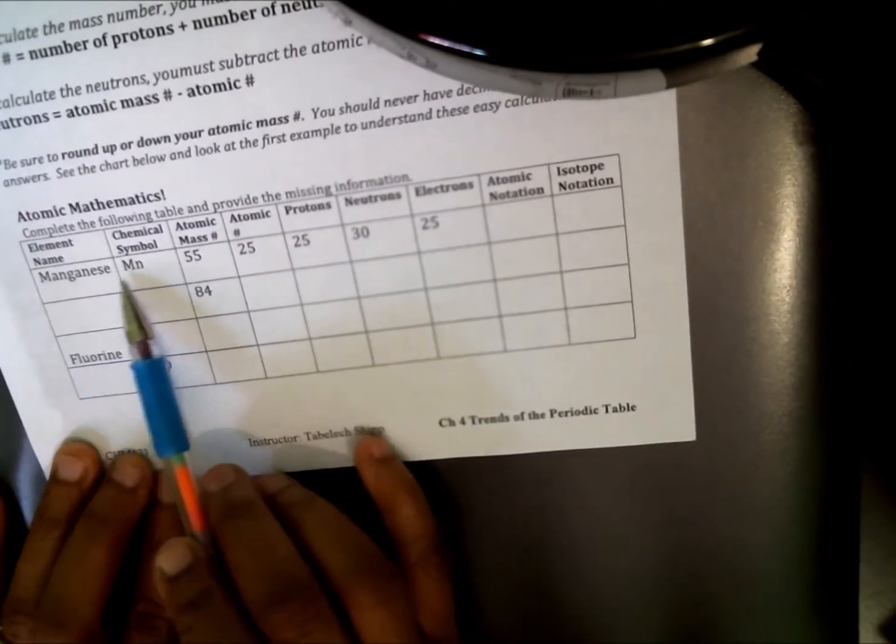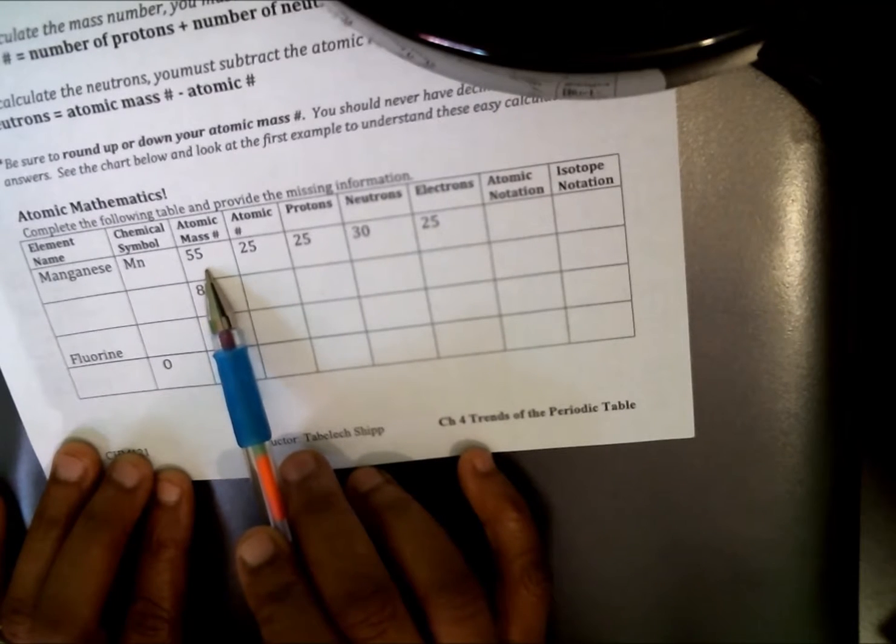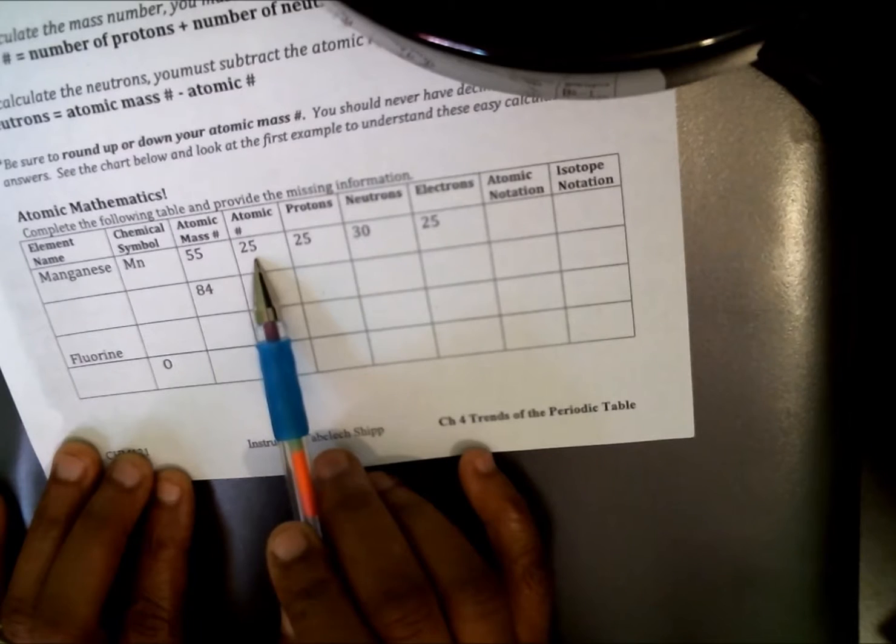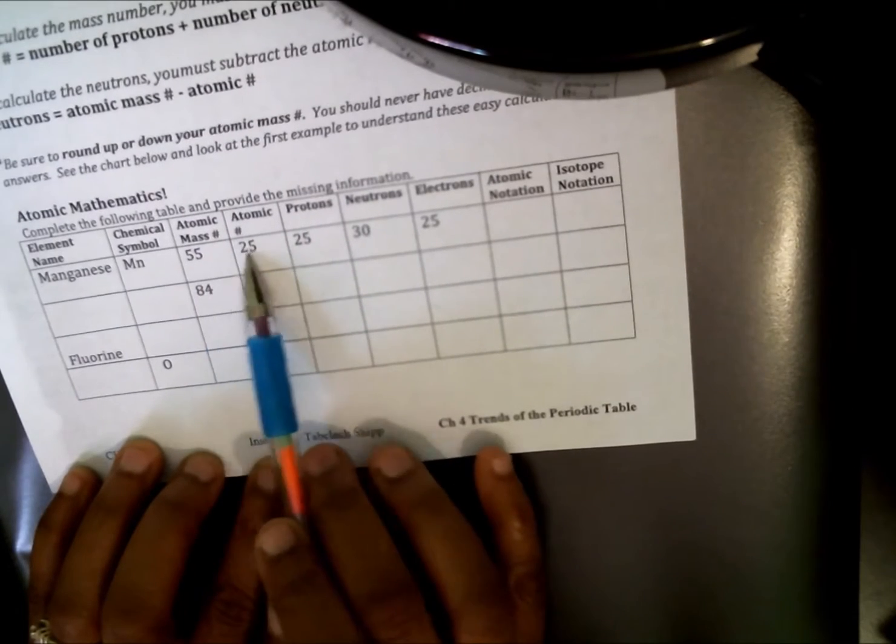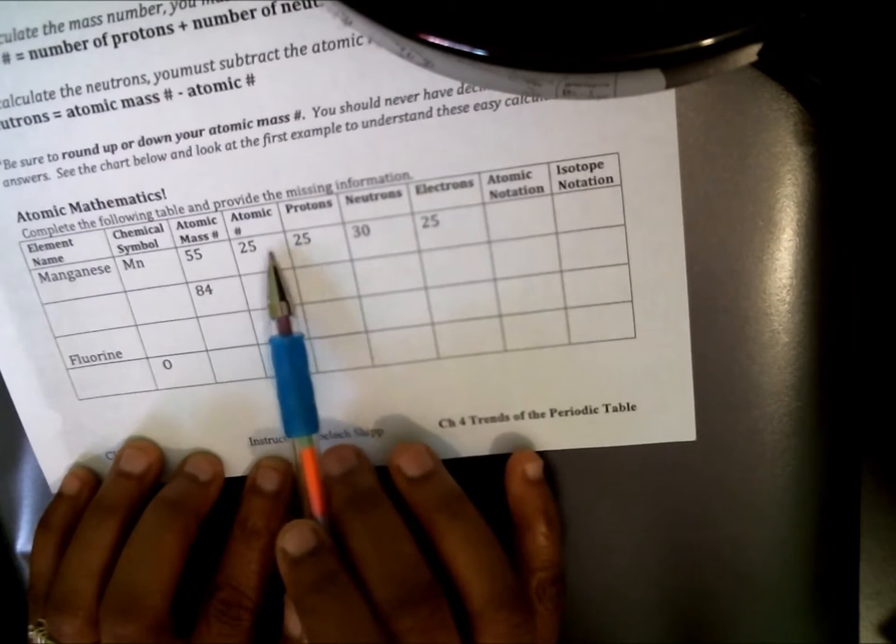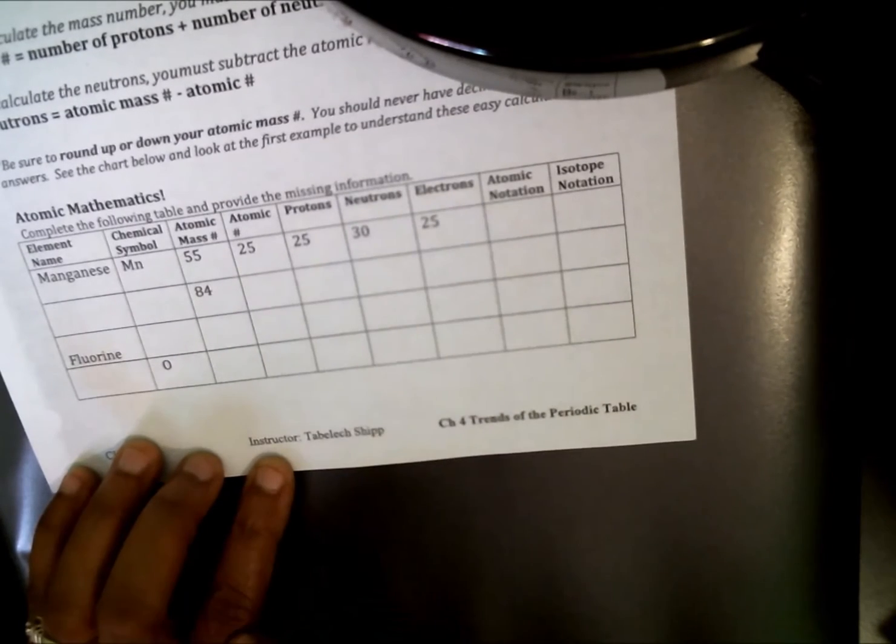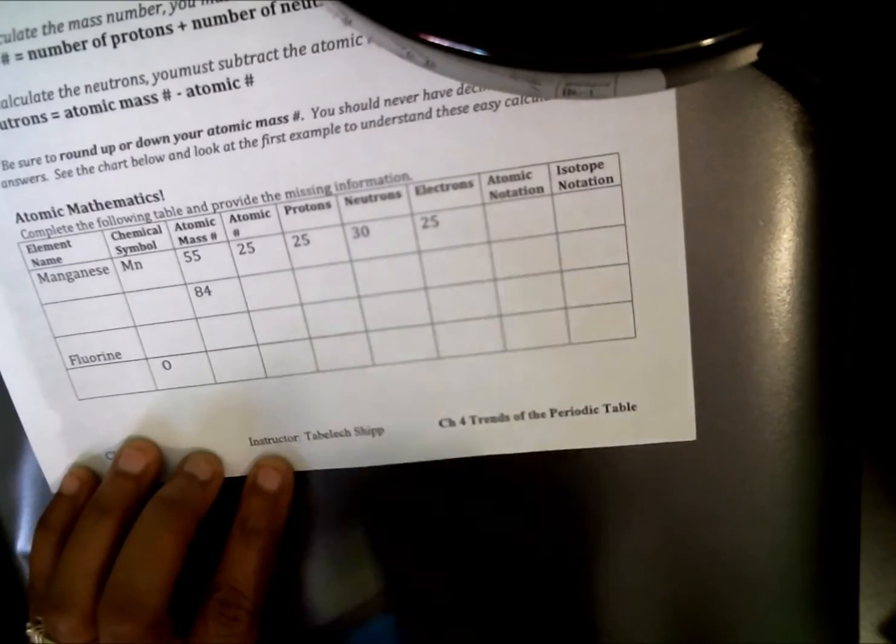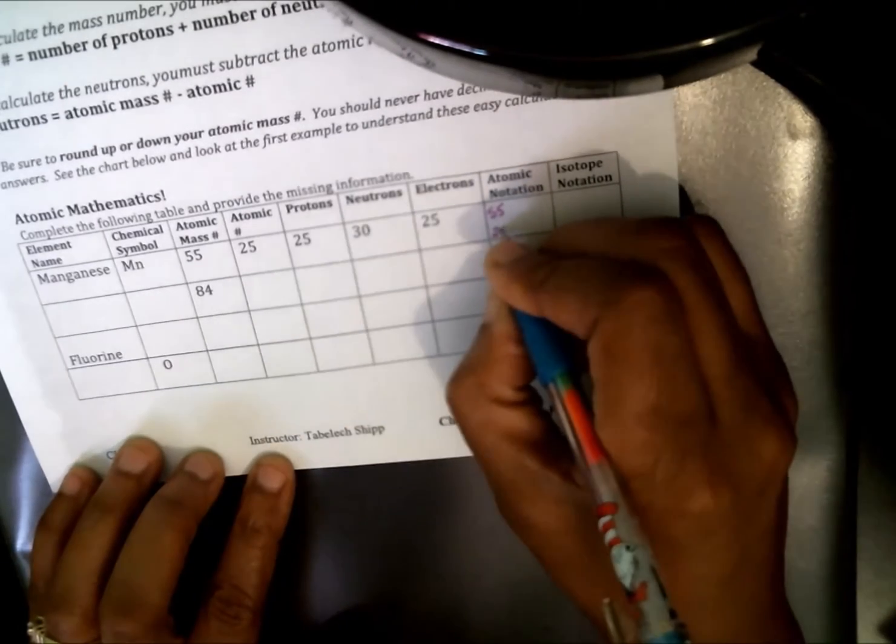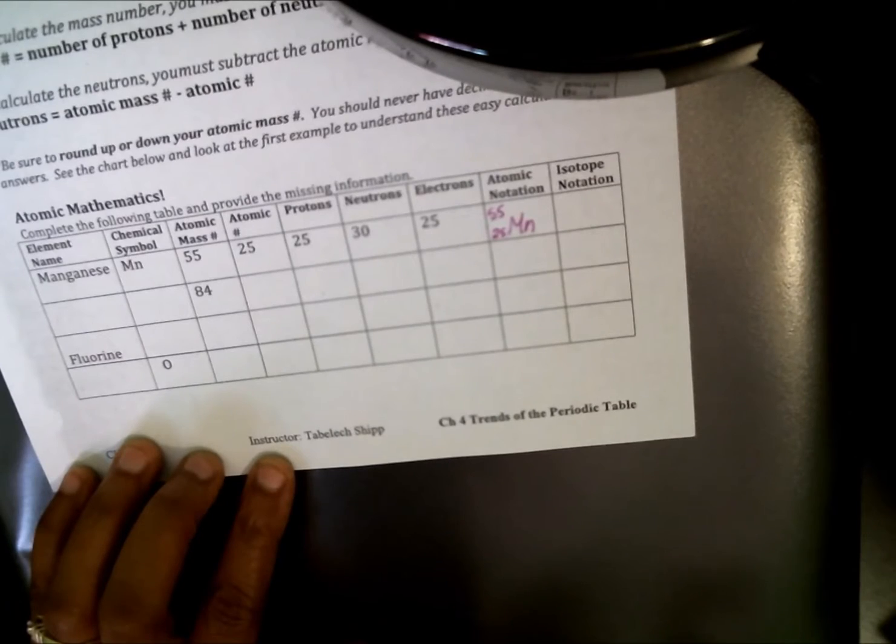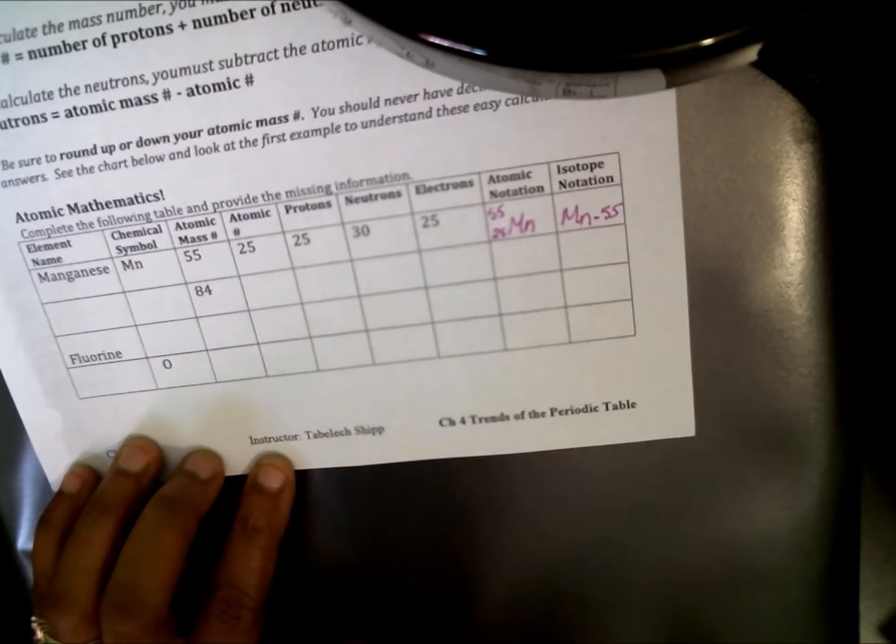To calculate the mass number, you are going to be given the protons and the neutrons. Now, the mass number that you see on the periodic table is exactly that number for that particular element. However, there may come a time where you are going to be given a different proton number and a different neutron number on a chart, such as the one that we are going to do below, that you need to add those two numbers together to get your mass number. Lastly, to get our neutrons, you are going to subtract your atomic mass number from your atomic number. And again, please be sure to round off your atomic mass number to the nearest whole number. Let's get started with this handout. Here, I have given you manganese. The chemical symbol is Mn. The atomic mass number is 55. Again, I got that from my periodic table because I rounded off the number that was there. My atomic number is 25. Protons is 25.